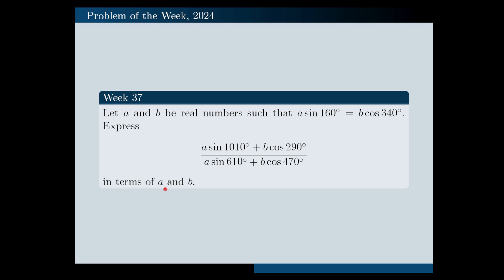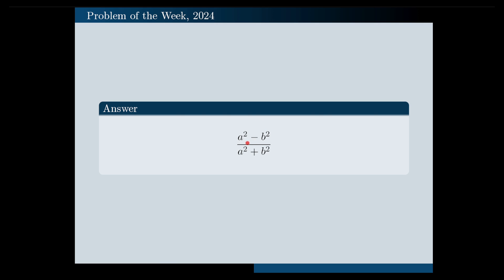It would be a good idea if you pause the video at this point and try to solve the problem yourself first. If you do your calculations correctly, the final answer to the problem will be A squared minus B squared all over A squared plus B squared.